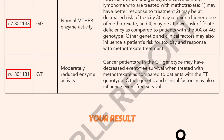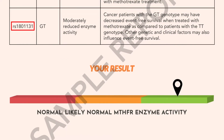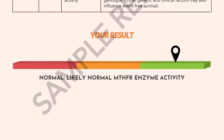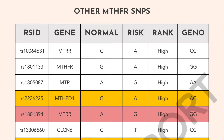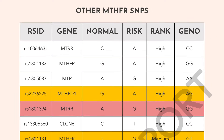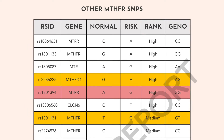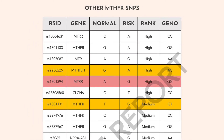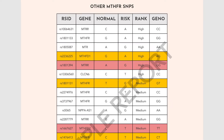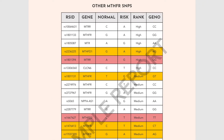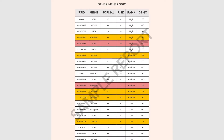Depending on the genotype of these SNPs, your final result is displayed as a bar diagram. The next section of the report, titled Other MTHFR SNPs, profiles your genotypes for other variations in the MTHFR gene, which are associated, in varying degrees, with MTHFR enzyme activity.